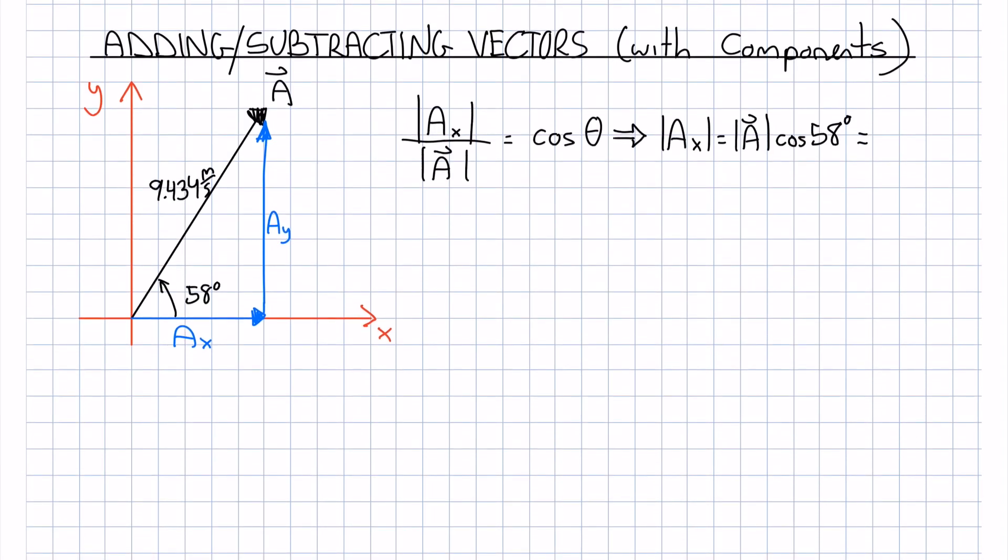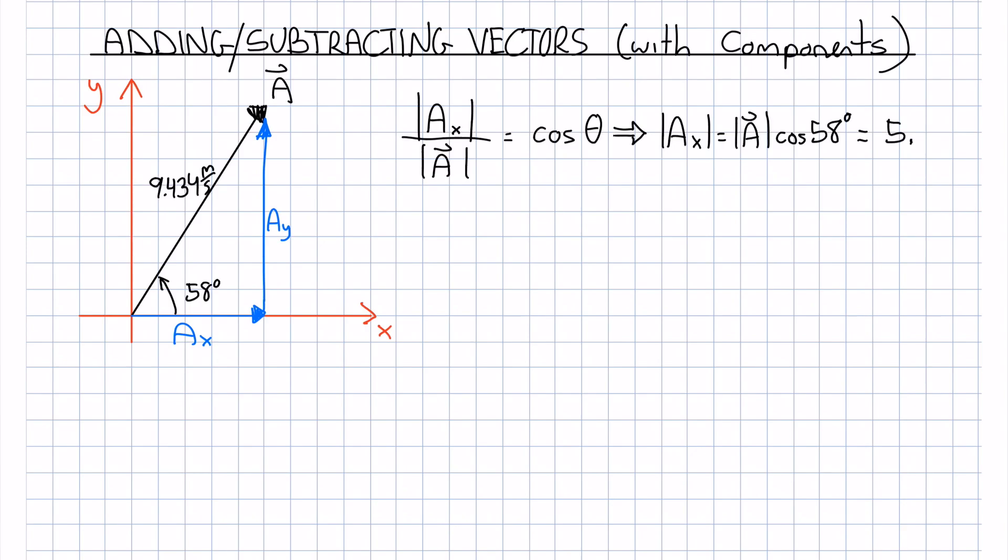We get an x component of 5.00 meters per second. Now that I look at that, I realize I probably messed up the significant figures, but let's concentrate on the procedural aspect of adding vectors right now.